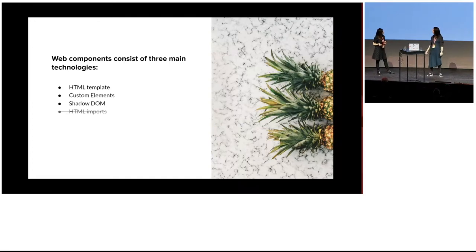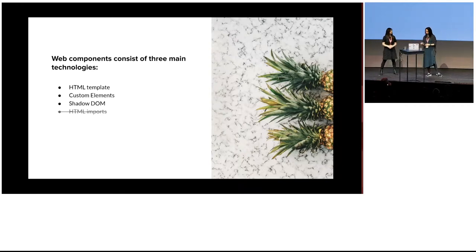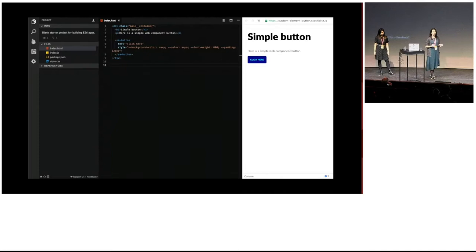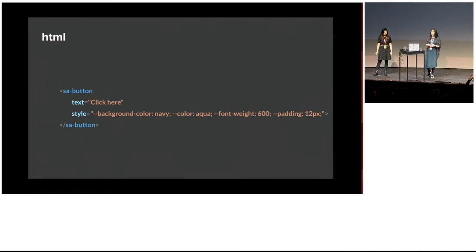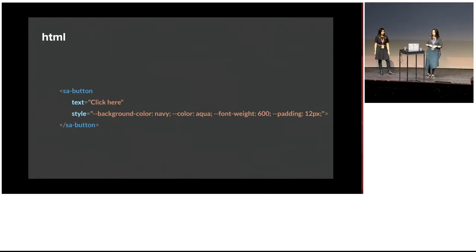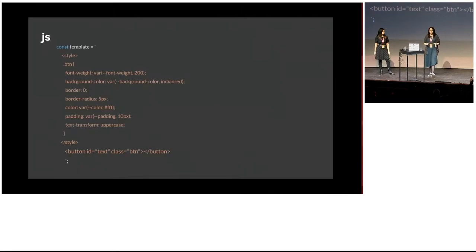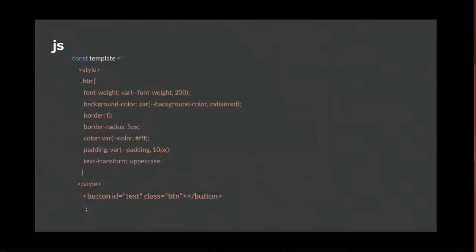Anna, can you tell us how we can quickly build a web component with this technology? Sure. We're going to take a quick look at how we can build this simple button here with vanilla JS. So in our HTML we would have our web component, which is called SA button. We have a custom attribute called text, which is where we add the text of the button. We also have a style attribute where we add all these custom CSS variables, which we've made for the developer to access so they can change styling wherever they need to. In our JavaScript, we create a template with the styling and the HTML — in this case it's just a simple button — and in the styling we have the CSS variables.